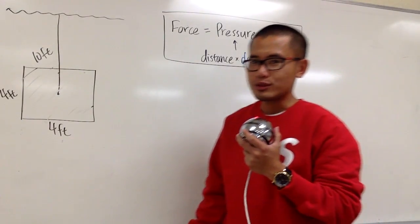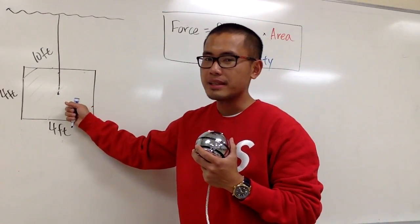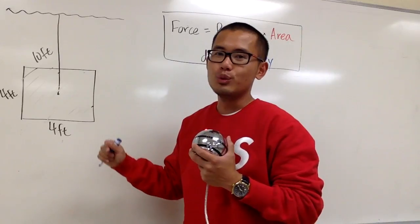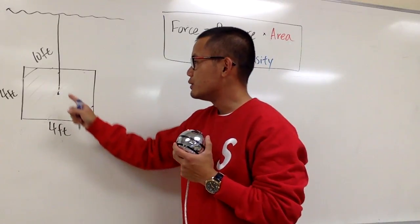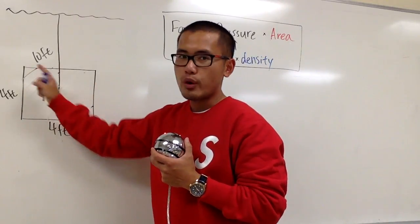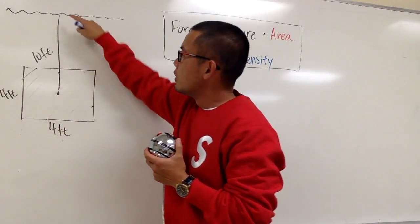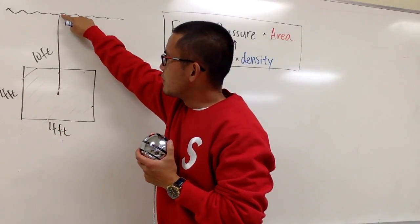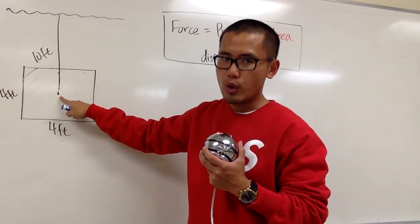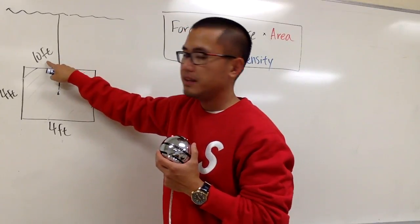We're going to find the hydrostatic force acting on this side of the plate when we put it vertically into the water. As you can see, this is a square — each side is 4 feet, and from the water surface to the middle of the square is altogether 10 feet.